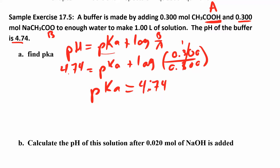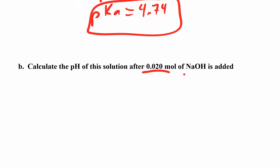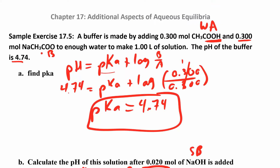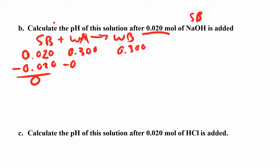Now for part B: calculate the pH after adding 0.02 moles of sodium hydroxide. This is a strong base, so it's going to react with the weak acid and make some weak base. I'm starting with 0.020 moles of strong base, 0.3 moles of weak acid, and 0.3 moles of weak base. What's going to happen is I use up all of the strong stuff — for every one mole of strong base used, it reacts with one mole of weak acid and produces one mole of weak base. So I subtract from the strong base and weak acid, and add to the weak base.